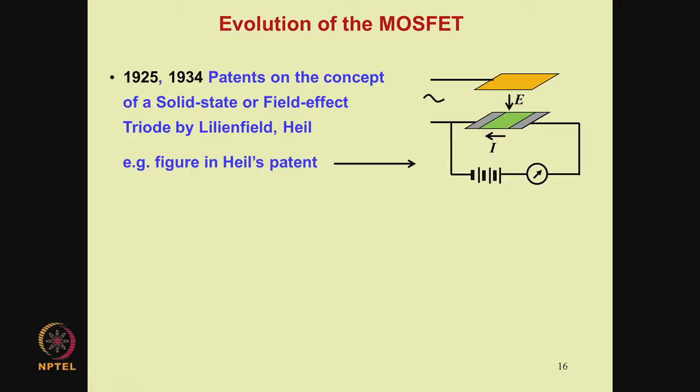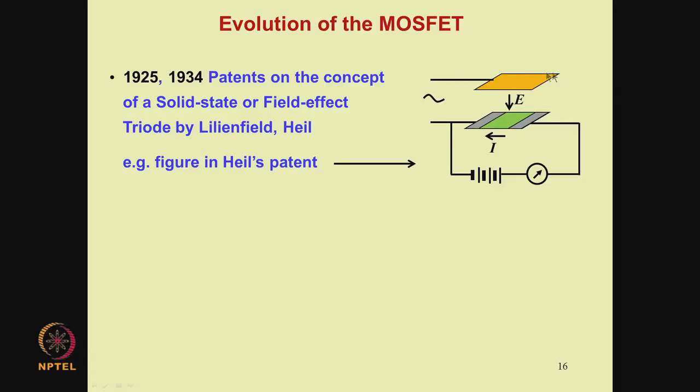After this idea was introduced as a replacement for the vacuum tube triode, which was prevalent at that time, people started trying to realize this idea in practice. Vacuum tubes were big in size and the vacuum could only be created in a glass bulb, making the entire structure brittle. Heat dissipation and reliability were also issues. Therefore, people were trying to realize the vacuum tube in a solid state, and this particular structure was considered as an analog of the vacuum tube in solid state.